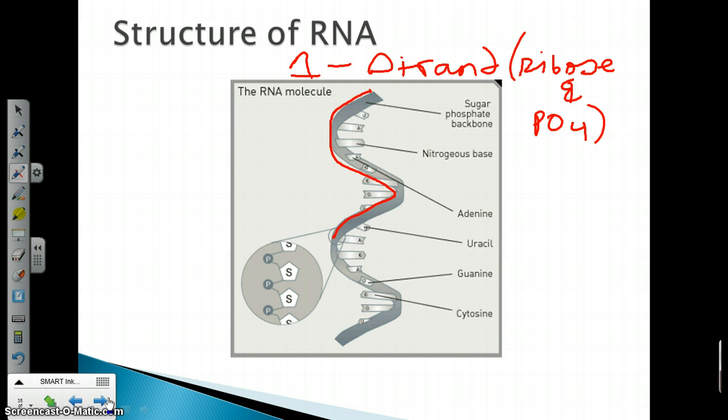Connected to the ribose and phosphate is a nitrogenous base. So here we see uracil, adenine, and when in further stages, these two hook up together and uracil reacts with adenine and cytosine reacts with guanine. However, we also must understand the function of RNA.